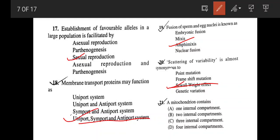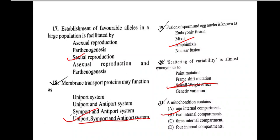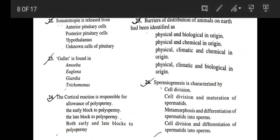A mitochondrion contains two internal compartments: one compartment between the outer and inner mitochondrial membrane, and another compartment inside the inner mitochondrial membrane. Somatotropin, our growth hormone, is released by the anterior pituitary cells. Gullet is found in Euglena. The cortical reaction is mainly responsible for the late block of polyspermia — option C.